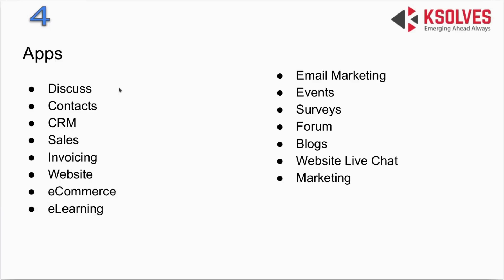Now let's look at the apps provided to each client instance — the end user's database. The end user purchasing a SaaS plan from the website will receive a separate database containing modules such as Discuss, Contacts, CRM, Sales, Invoicing, Website, E-commerce, E-learning, Marketing, Events, Service, Forum, Blogs, Live Chat, and more. We have also done additional customizations to improve the UI and added features to all of these modules.